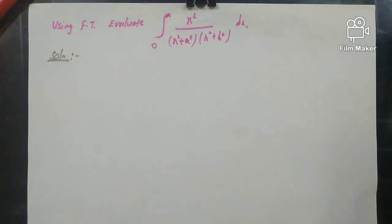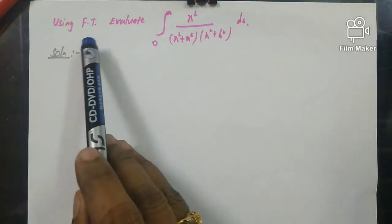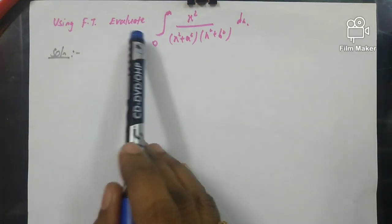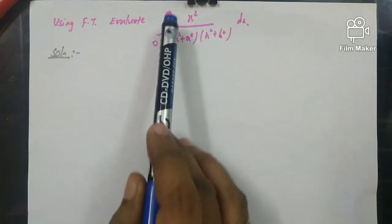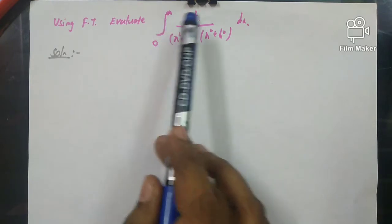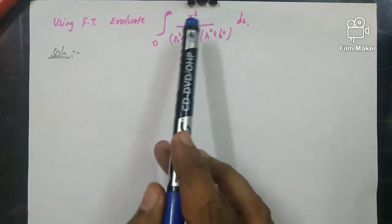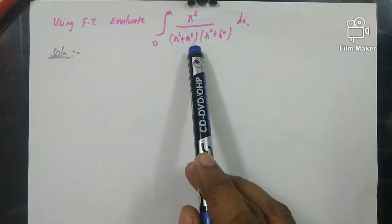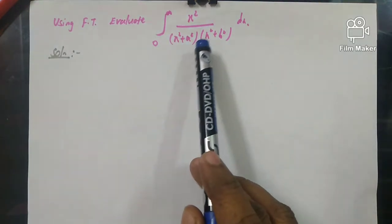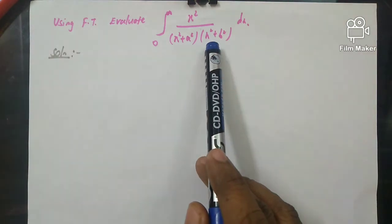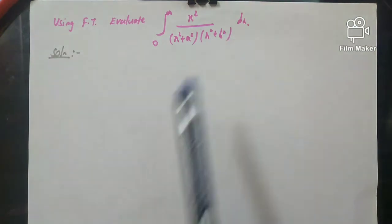Welcome to the lecture series of Fourier Transforms. In this video, we will see an evaluation using Fourier Transforms. Evaluate the integral from 0 to infinity of x² divided by (x² + a²)(x² + b²) dx. This is the question.